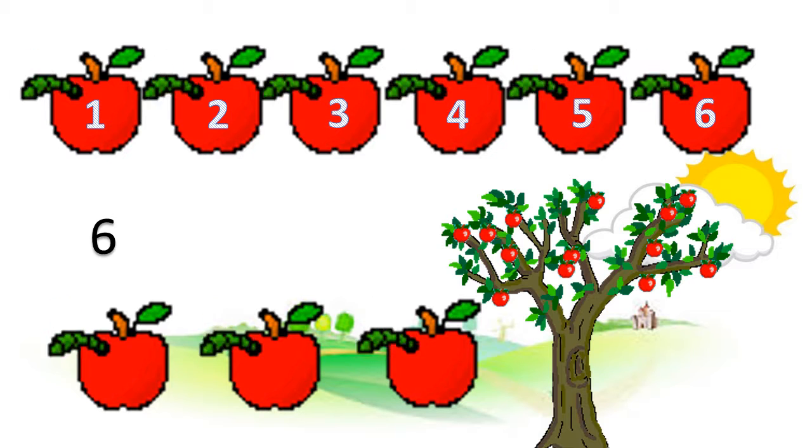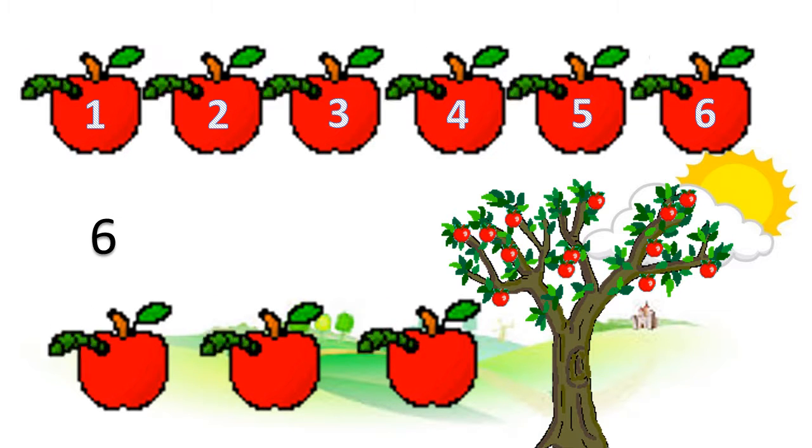Laura picked three more from the apple tree. Remember, you have six. Get it going. Six, seven, eight, nine. She has a total of nine apples because six plus three equals nine.